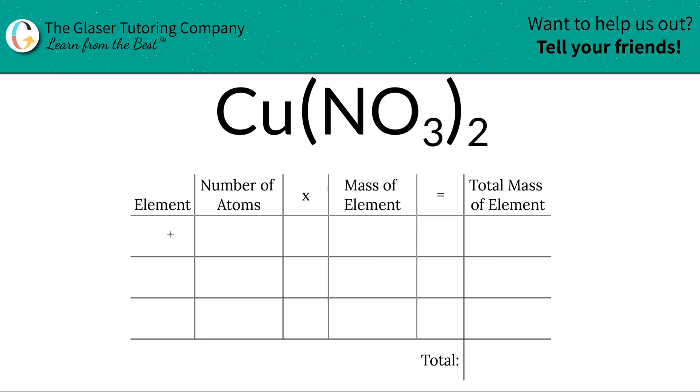So the first step is to write down the elements we see in the compound. We see copper, Cu, we see nitrogen, N, and we see oxygen, O.